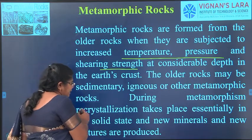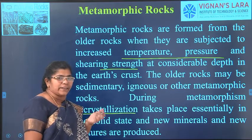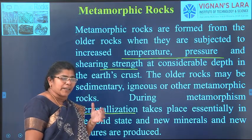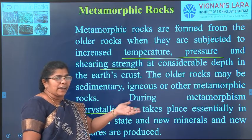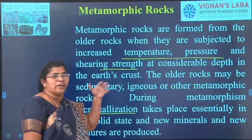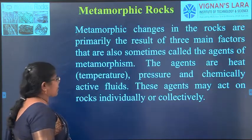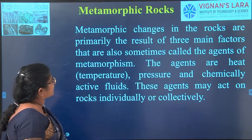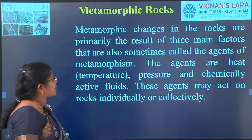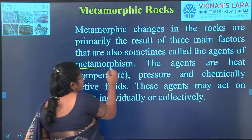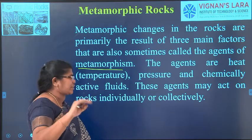During recrystallization, minerals and other constituents such as silica, potassium, and other elements react with heat and temperature, then mix together to form the newly formed material — the metamorphic rock. Metamorphic change in rocks is primarily the result of three main factors, sometimes called the agents of metamorphism: heat, pressure, and chemical change.